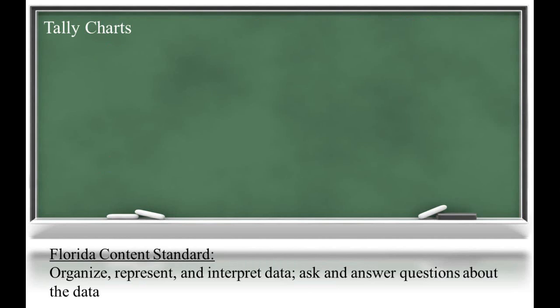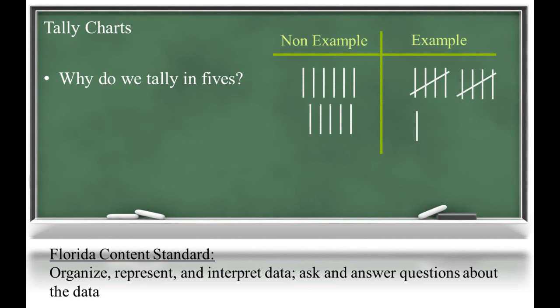Tallying is a quick way to show how many, which is helpful when recording results of a survey or sorting several different types of things into groups. So why do we tally in fives? Can you tell how many tallies are recorded? How about now? As you can see, tallies are recorded in groups of five to make it easier and more efficient to count.